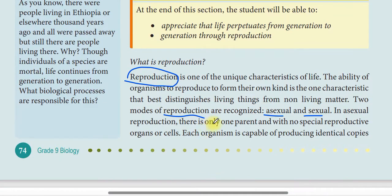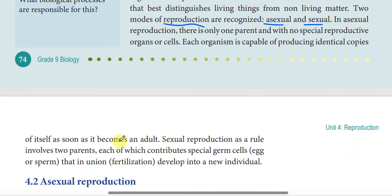In asexual reproduction, there is only one parent, with no special reproductive organ or cells. Each organism is capable of producing an identical copy of itself as soon as it becomes an adult.